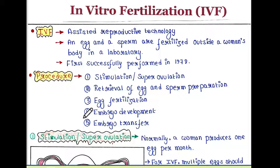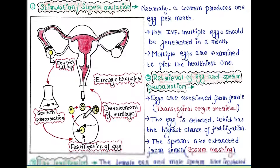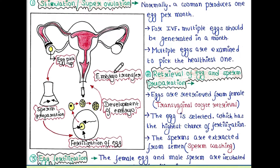The first step is stimulation or super ovulation. Normally a woman produces one egg per month in the menstrual cycle, but for IVF, multiple eggs should be generated in a month. This is done by injecting follicle stimulating hormone, or FSH. The multiple eggs are then examined to pick the healthiest one.